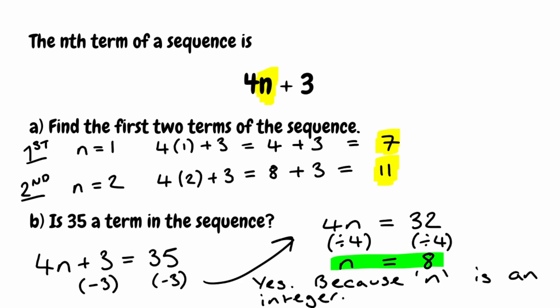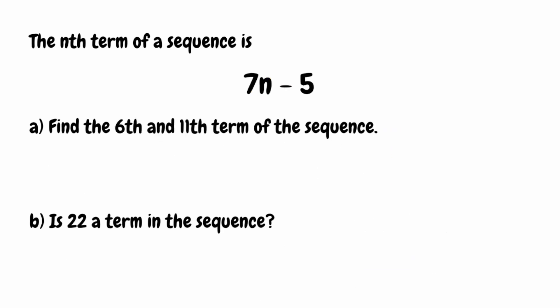Let's try this method with another question. We've been given that the nth term of a sequence is 7n take away 5. We want to find the 6th and the 11th term of this particular sequence. When we're looking for particular term numbers, those numbers are what we substitute for n.